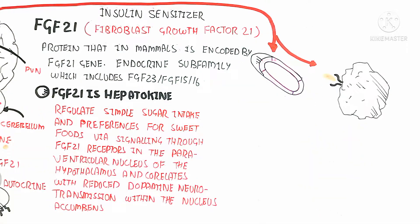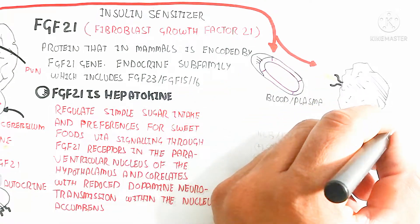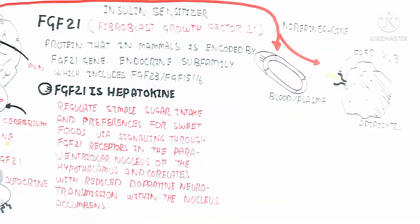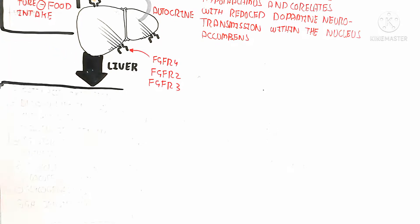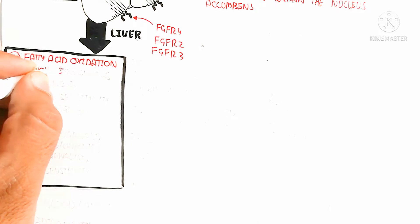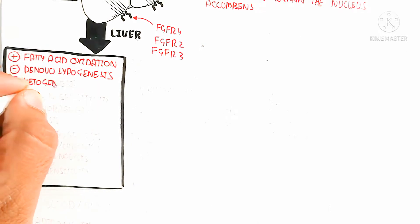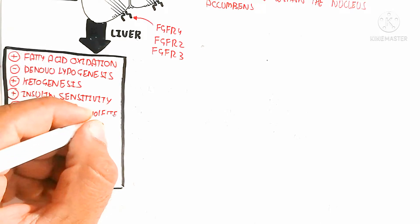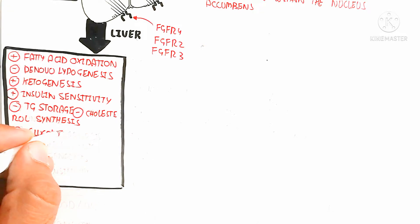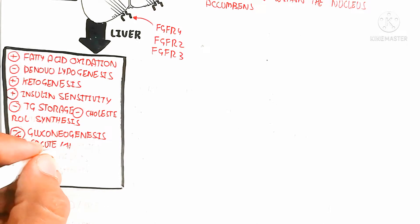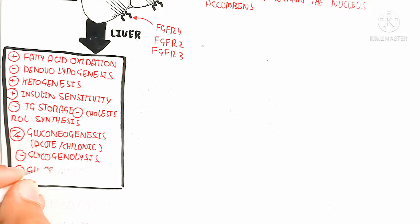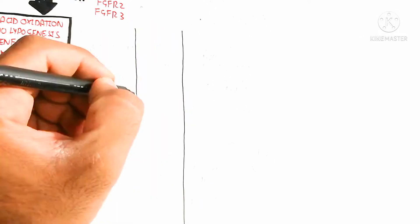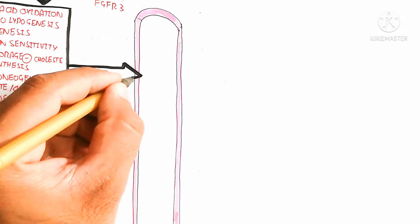FGF receptors one and KLB also bind with adipocytes, changing adipose tissue physiology. In the liver, due to autocrine binding of FGF21, the effects include: increased fatty acid oxidation, decreased de novo lipogenesis, increased ketogenesis producing ketone bodies as an alternate fuel, increased insulin sensitivity, decreased triglyceride storage, decreased cholesterol synthesis, and gluconeogenesis can increase or decrease based on acute or chronic conditions. Glycogenolysis is decreased and growth hormone sensitivity is decreased.